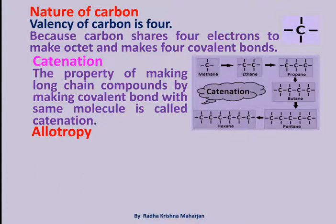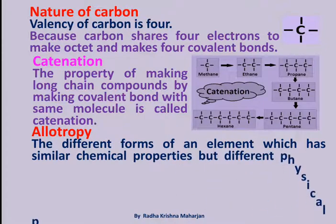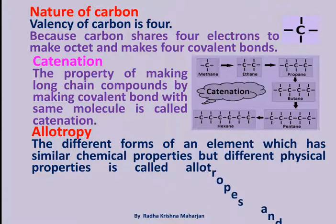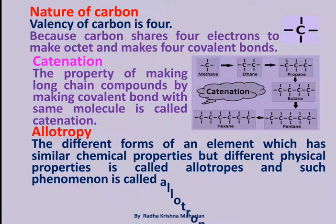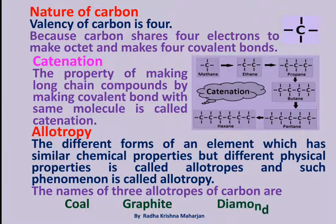Allotropy: The different forms of an element which have similar chemical properties but different physical properties are called allotropes, and such a phenomenon is called allotropy. The three allotropes of carbon are coal, graphite, and diamond.